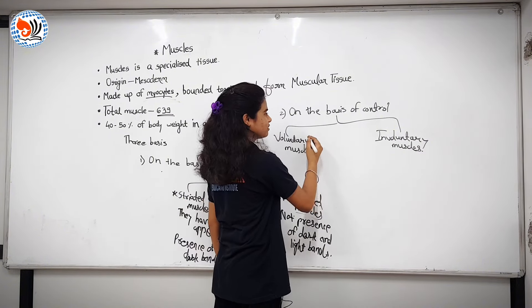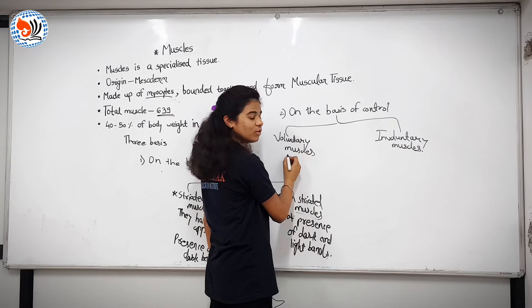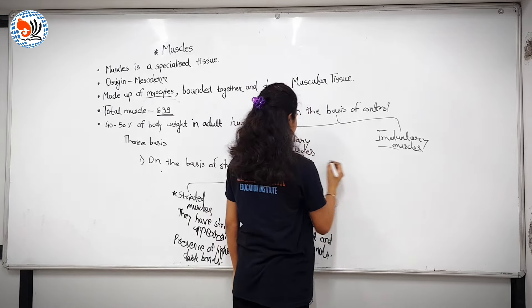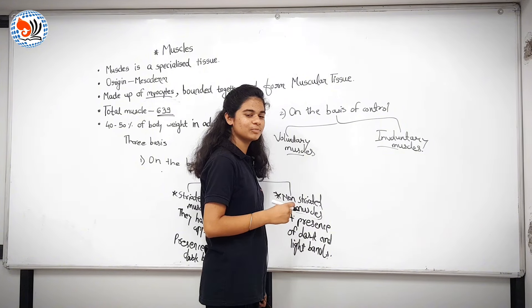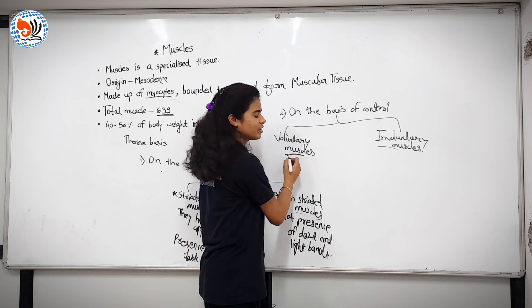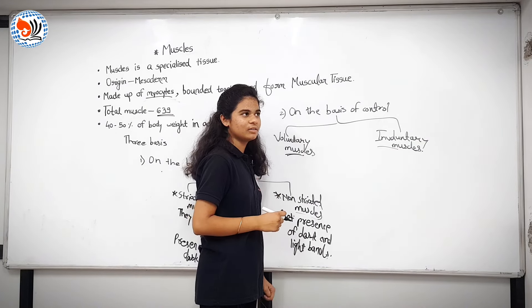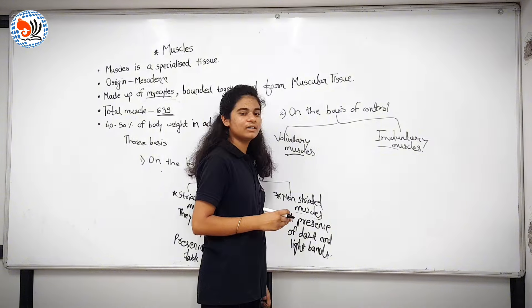We have classified muscles on the basis of control. On the basis of control, there are two types of muscles: voluntary muscles and involuntary muscles. Voluntary muscles are muscles under our control. For example, you can take an example of heartbeat and your legs. With your legs, if you want, you can move.